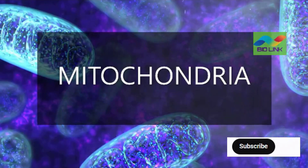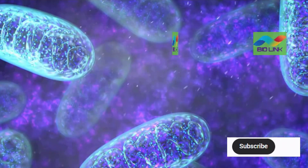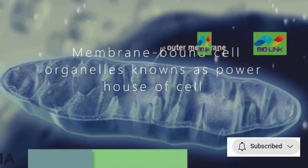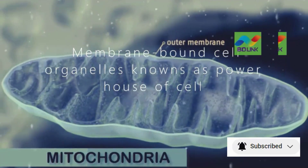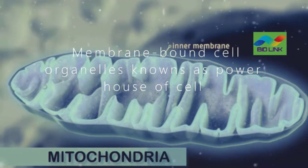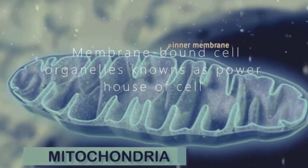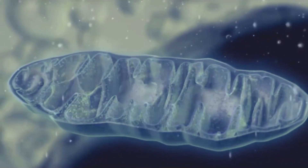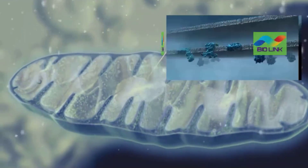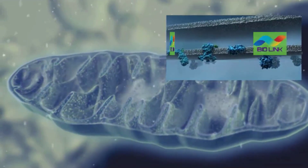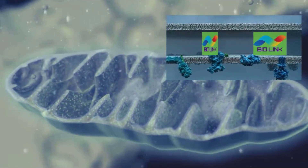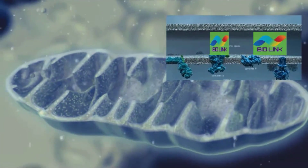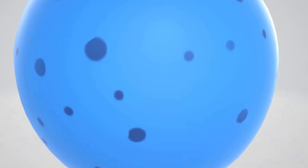Mitochondria: It is known as the powerhouse of the cell because all the metabolic reactions of the cell take place in the mitochondria to produce energy. It is a double membrane-bound organelle. The outer membrane is flattened and the inner membrane bends inwards. The semi-fluid material found within the second layer of membrane is called the matrix. It has its own DNA, RNA, and ribosomes, and can even replicate on its own.